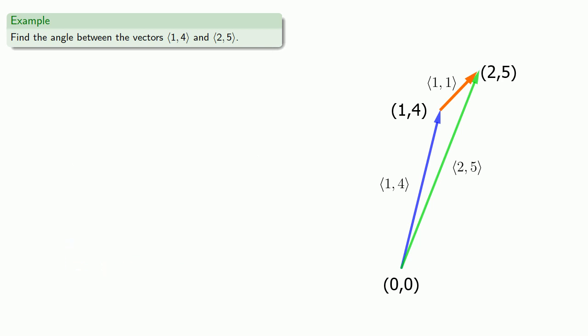If I want to find the angle between two sides of a triangle, I can use the law of cosines, which requires the length of all three sides. That's just the magnitudes of the three vectors (1,4), (2,5), and (1,1).